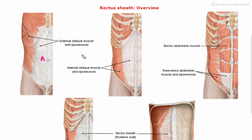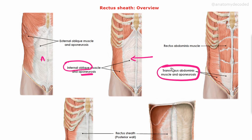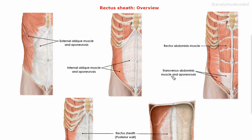Here is the internal oblique muscle with its aponeurosis, which is also forming the anterior wall of the rectus sheath. Then the transversus abdominis muscle with its aponeurosis forms the anterior wall only in the lower part of the rectus sheath.